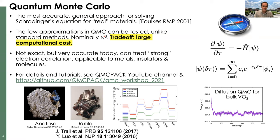The method is normally cubic in the electron count, but the pre-factor is really large. The trade-off for this improvable approach with few approximations is that the computational cost is orders of magnitude larger than many standard approaches. The method is very accurate today and can do science that other methods struggle with — materials, molecular systems — where we'd like to double-check results or use QMC results standalone. We have a YouTube channel with introductions to the methodology and a virtual machine where you can run QMC Pack tutorials.